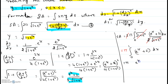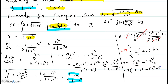The integral of (e to the x plus 2) is e to the x plus 2x, evaluated from 0 to 1. This gives π times (e plus 2) minus (e to the 0 plus 0), which is π times (e plus 2 minus 1), equal to π times (e plus 1). Hope this video helps. Thank you.